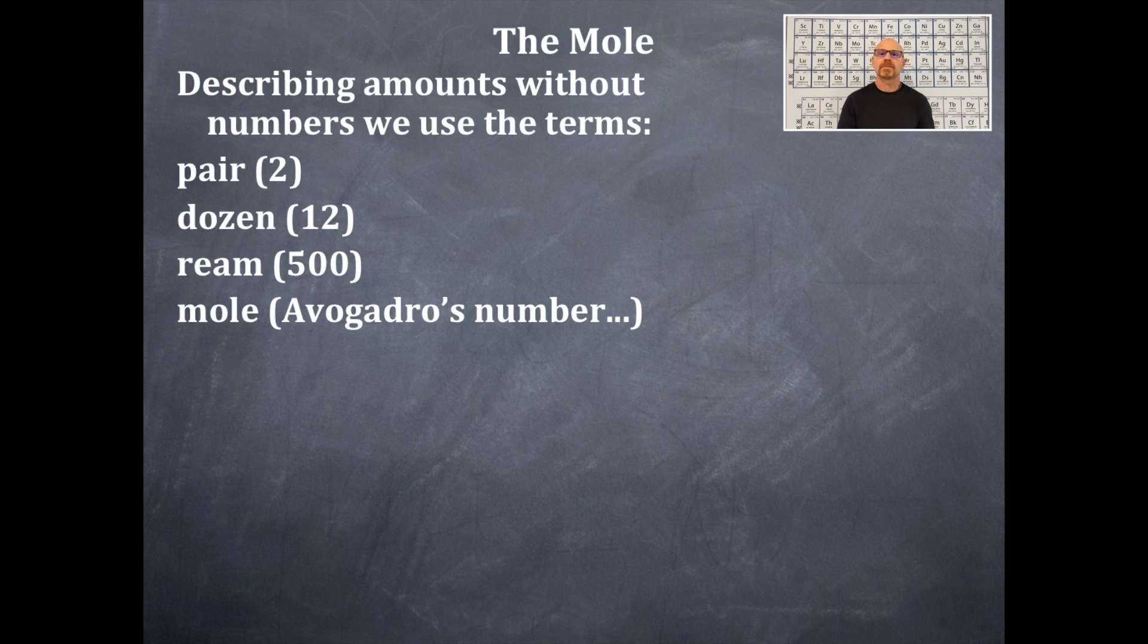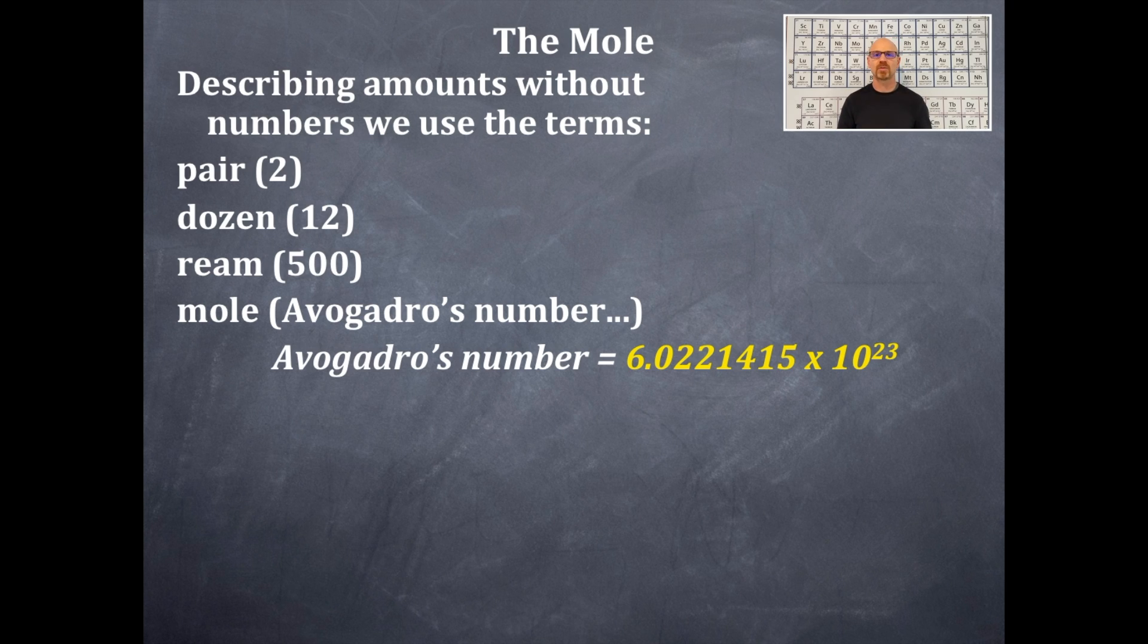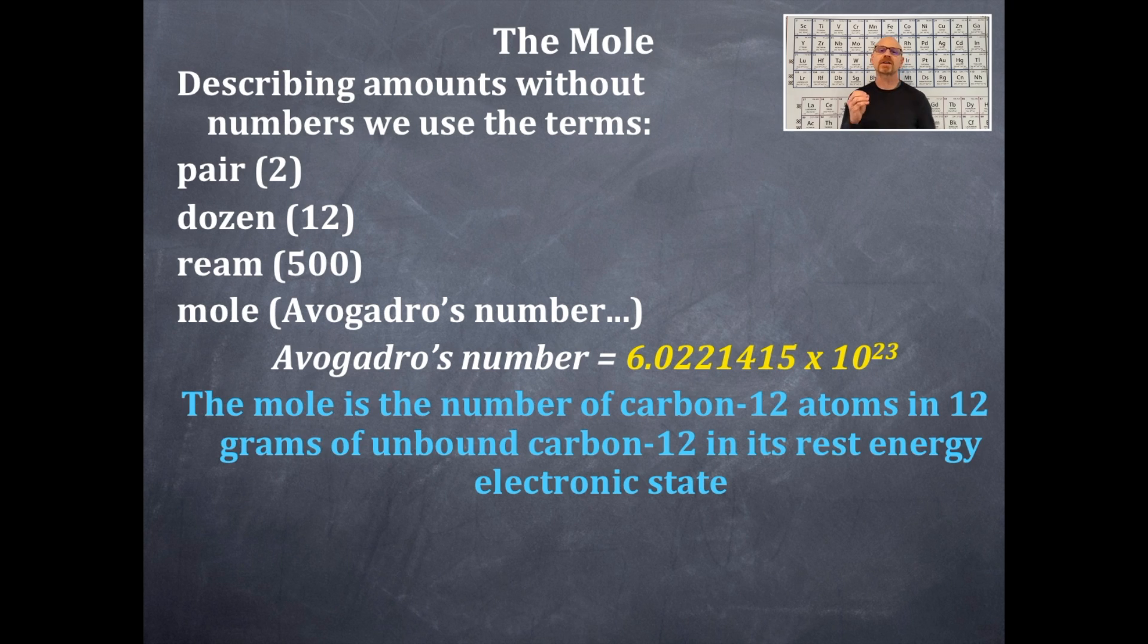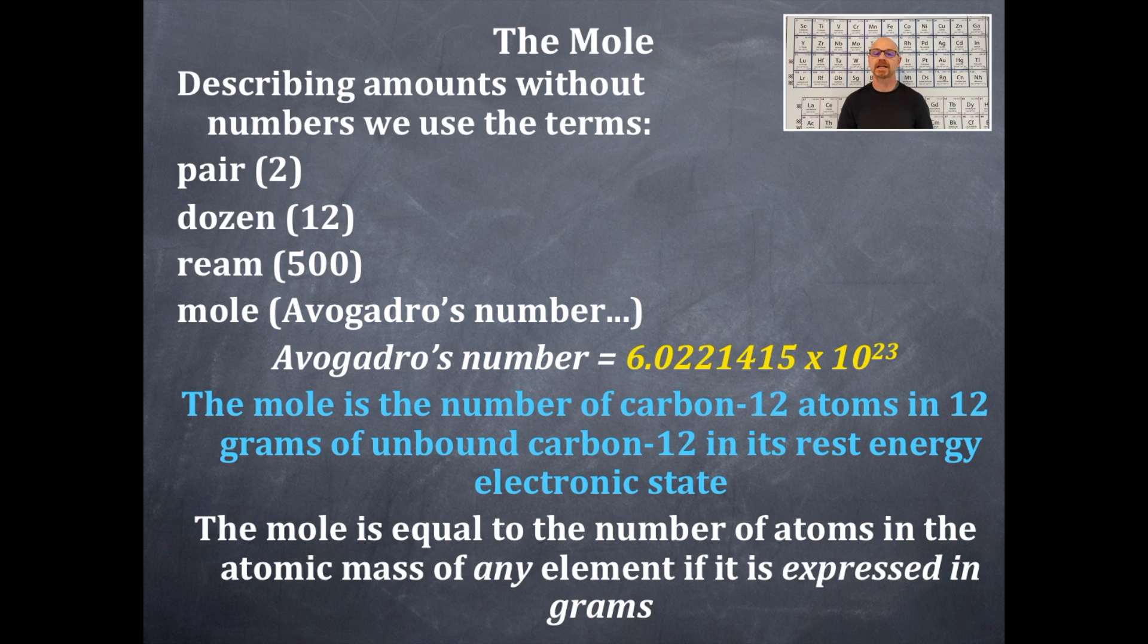The mole is Avogadro's number. And what is Avogadro's number? 6.022 times 10 to the 23rd, therefore 23 videos in this series. Here's our definition of the mole. The mole is the number of carbon-12 atoms in 12 grams of unbound carbon-12 in its rest energy electronic state. The mole is equal to the number of atoms in the atomic mass of any element if it is expressed in grams.